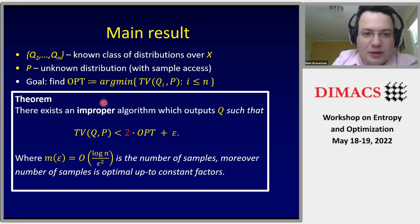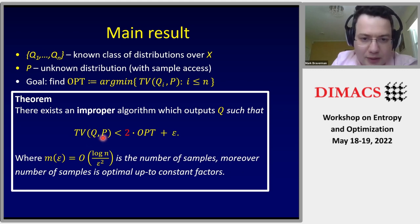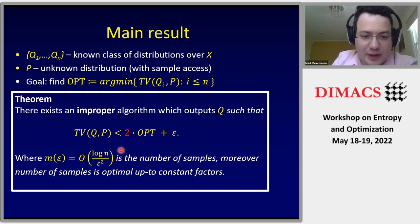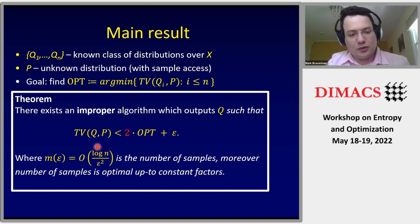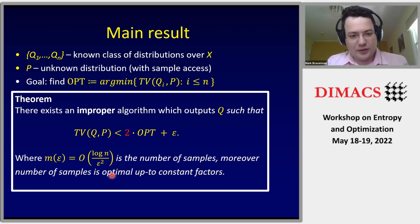The main theorem we will mostly outline today is the following. There is an improper algorithm — it outputs some distribution q that is not necessarily in the set {q_1, ..., q_n} — such that the total variation distance of q from p is at most a multiplicative factor of 2 from the optimal plus an additive epsilon. The factor 2 is special in the sense that this is the best you can do. The query complexity scales as log(n) divided by epsilon squared, and this is optimal up to constant factors.